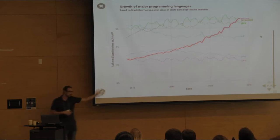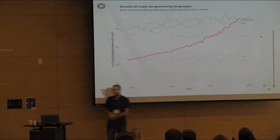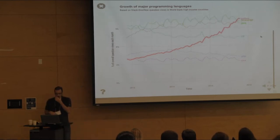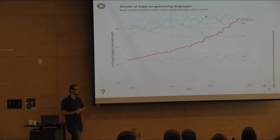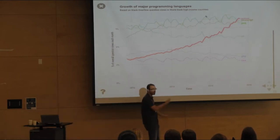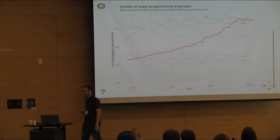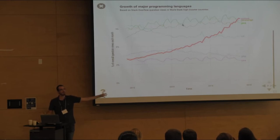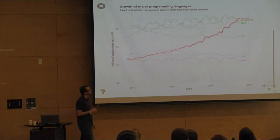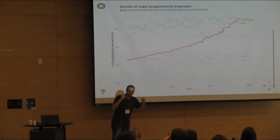Looking at the other languages in the chart, you see the same rapid growth for Python. Java has a very cyclical pattern — likely because many CS departments still teach in Java, so students are searching for it each semester. Python doesn't show that kind of pattern, which suggests that people who use Python use it year-round.